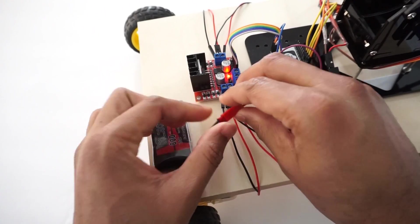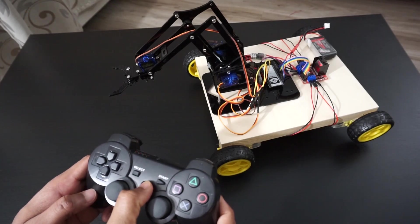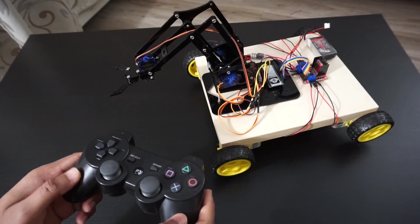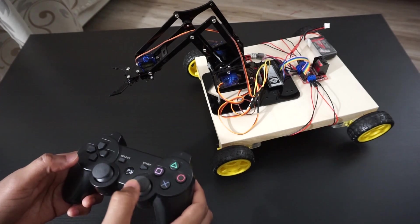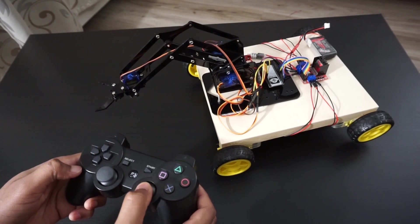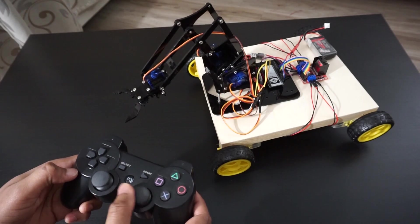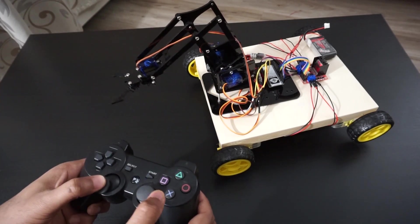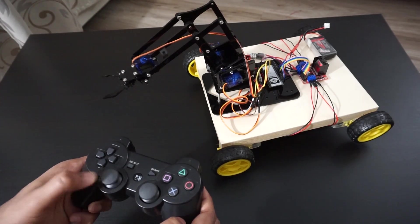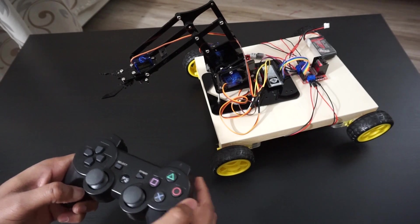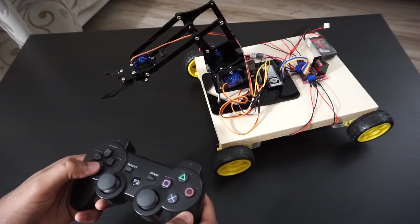Now connect battery to car. That's it. Let's see how it works. Press PS3 button on controller. Now we can control the robo arm using left and right side joysticks. We can control car's movement using these arrow buttons.